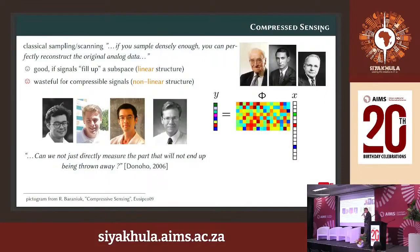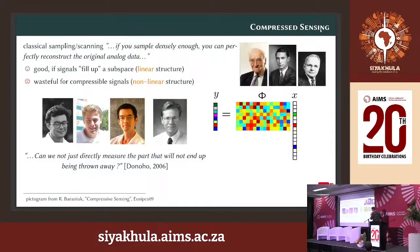In 2006, Candès, Romberg, and Terence Tao asked: is it not possible to only acquire the amount of data we need, so we don't have to throw anything away later? If you have a sparse vector — a high-dimensional vector with only few non-zeros at unknown locations — you compress it with a measurement matrix into a lower-dimensional vector. The goal is to design matrices and algorithms such that you can go back. This is the core idea of compressed sensing.